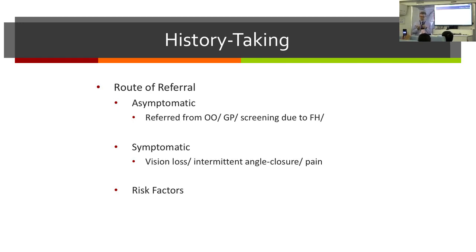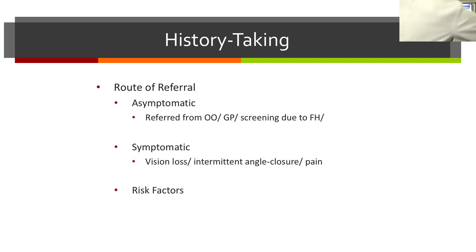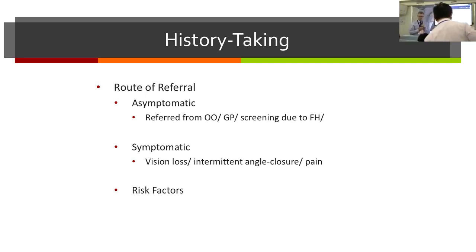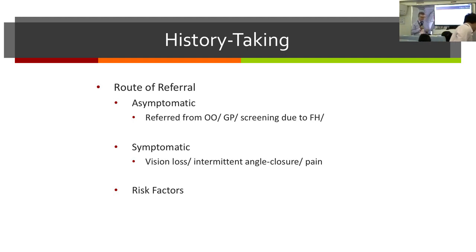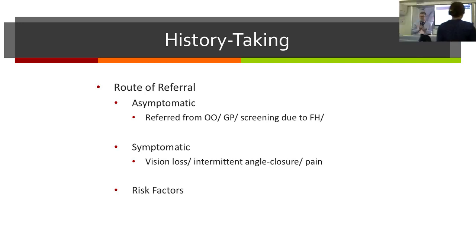Most glaucoma patients are referred from optometrists, from the GP, or from screening because of a family history of glaucoma, and many of these patients are asymptomatic. It can be symptomatic from vision loss, from episodes of intermittent or angle closure, and patients can present with pain with very high intraocular pressures. What's more important in the history is looking for risk factors to decide what likelihood a patient sitting in front of you has for developing glaucoma.